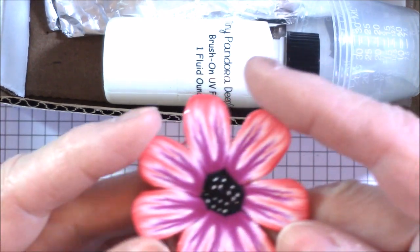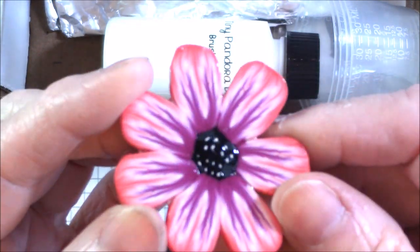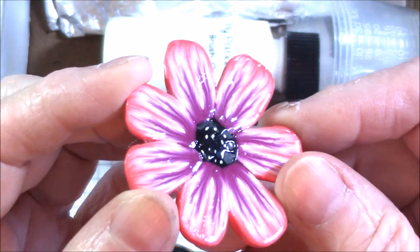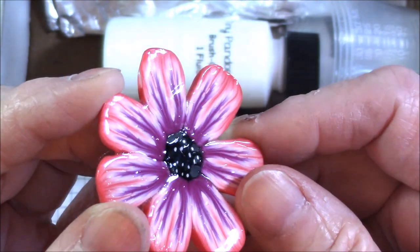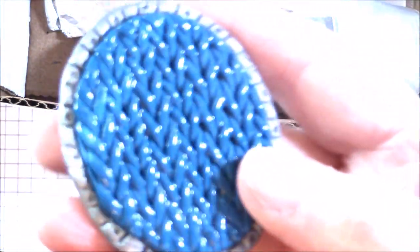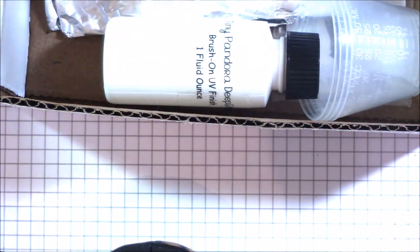This is the flower that I did. It was just a flower I'd made from the cane a long time ago. Look at the shine on that, isn't that pretty? This is just one coat of resin. This is my knit piece, remember we did the faux knitting? Look at the shine on that, isn't it gorgeous? I really like this stuff.